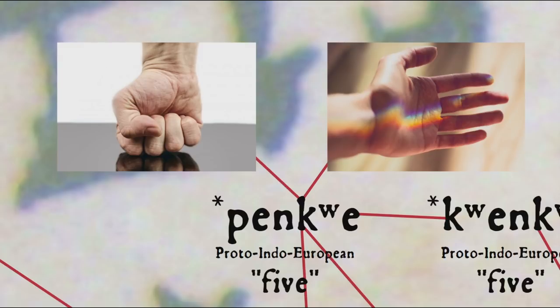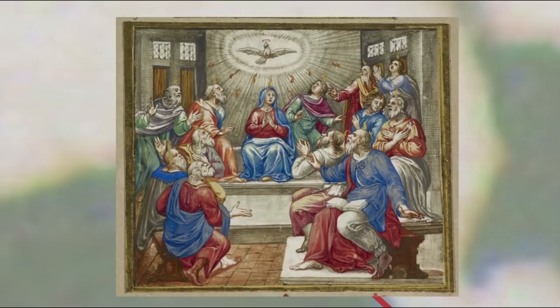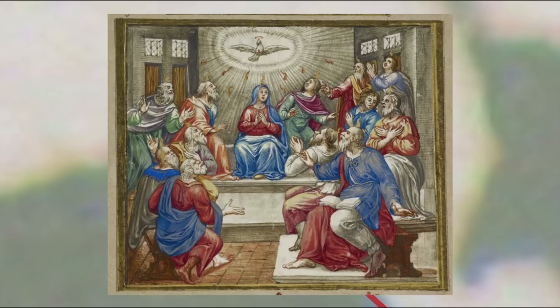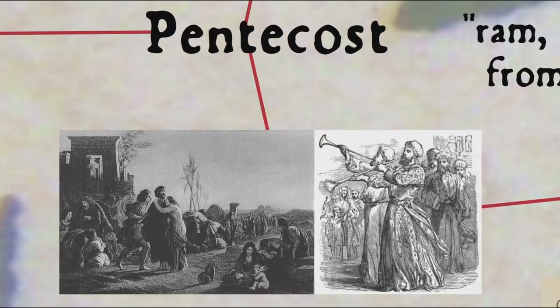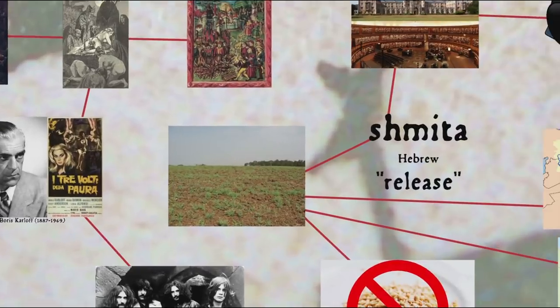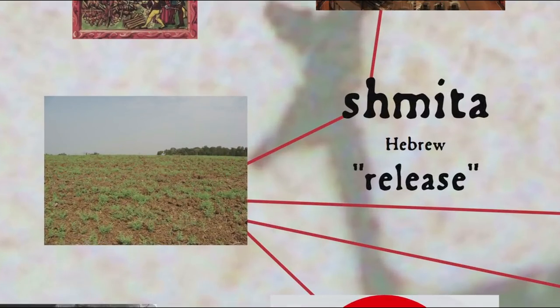Getting back to Pentecost: Christianity later adopted the originally Jewish festival as commemorating the Holy Spirit descending on the apostles and other followers of Jesus when they were celebrating Shavuot in Jerusalem, as described in the Acts of the Apostles. The Septuagint also uses the word Pentecost to refer to the year of Jubilee, which occurs every fifty years. Jubilee is the year at the end of seven cycles of Shemitah — those sabbatical years when you weren't supposed to work the fields.